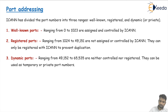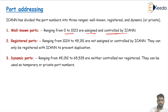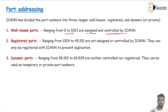Well-known port numbers range from 0 to 1023. Please note: these are assigned by ICANN as well as controlled by ICANN. If some port number is to be replaced or reassigned to a service, ICANN will take care of that.